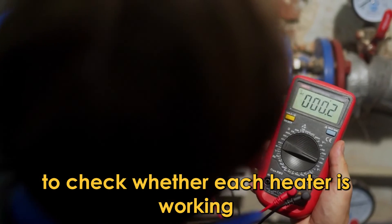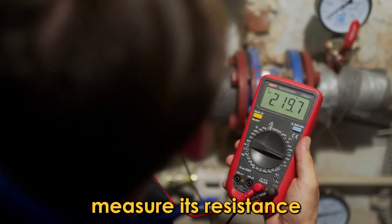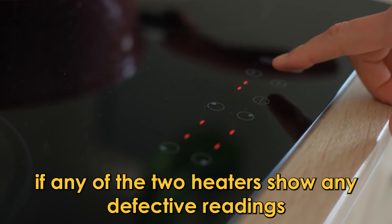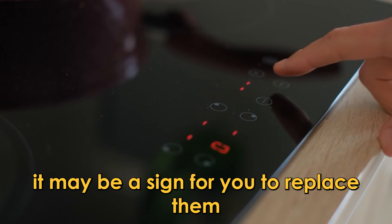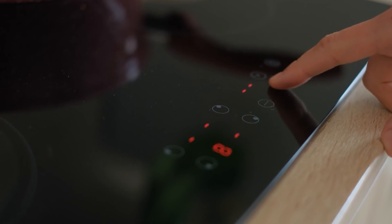Check the broil and bake heaters. To check whether each heater is working, measure its resistance. If any of the two heaters show any defective readings, it may be a sign for you to replace them. Thanks for watching.